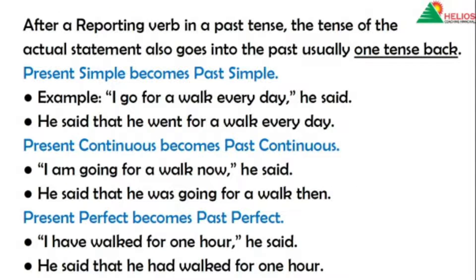After a reporting verb in the past tense, the tense of the actual statement also goes into the past — usually one tense back. This is a shortcut, a trick: take one tense back, and you will get your indirect speech. Keep this in mind.